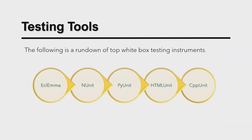There are many white box testing tools available. The major ones include EclEmma, NUnit, PyUnit, HTMLUnit, and CppUnit. There are several other tools available, and it is totally up to us or our organization and team structure how we use them. Sometimes people run tests in Visual Studio Code or Eclipse, but it depends on how we verify the code.